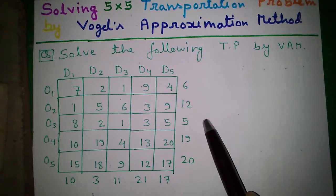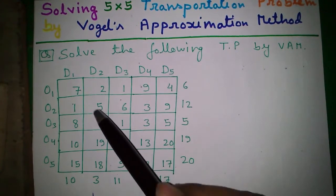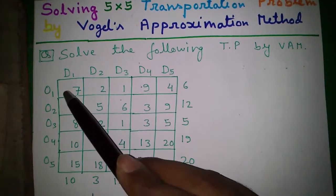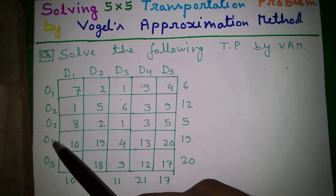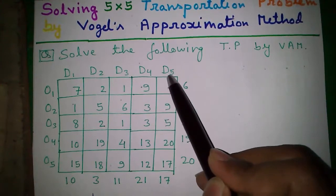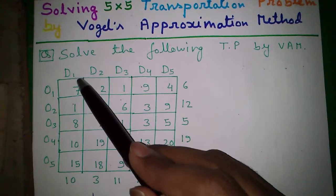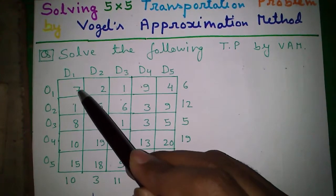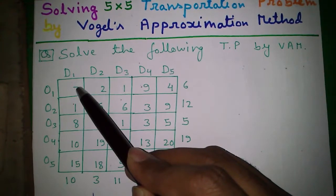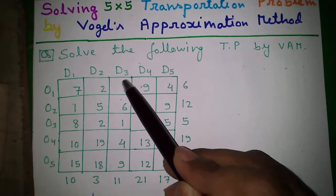First, some basics. This is called the transportation problem, this is called the cost matrix, and these individual cell values are called the transportation cost. We have 5 origins O1, O2, O3, O4 and O5, and 5 destinations D1, D2, D3, D4 and D5. If we transport 1 unit of goods from origin 1 to destination 1, our cost of transportation is 7 units — that may be 7 rupees or 7 dollars, anything. But if we transport 1 unit of goods from origin 1 to destination 3, our transportation cost reduces to 1.